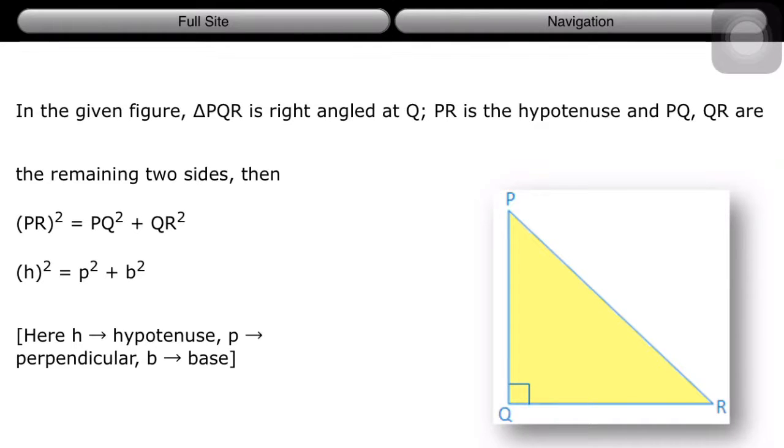And PQ will be called the altitude or perpendicular of that right-angled triangle, and PQ is represented by the letter p.